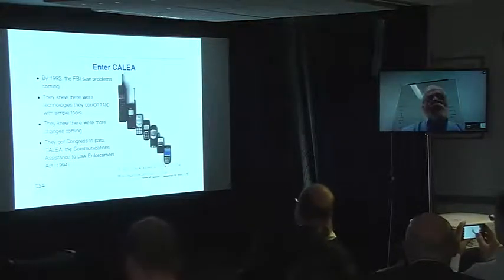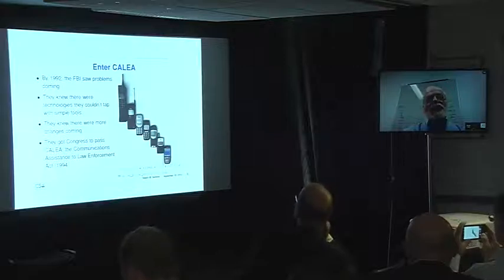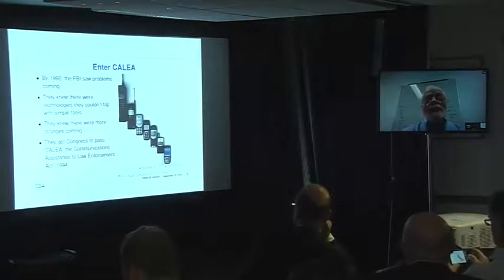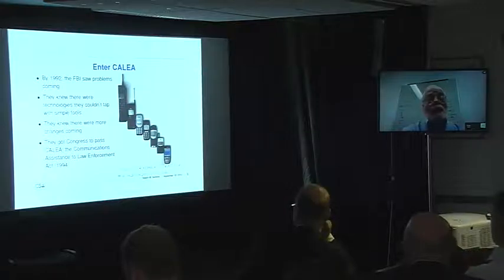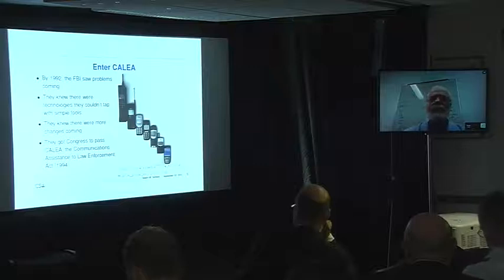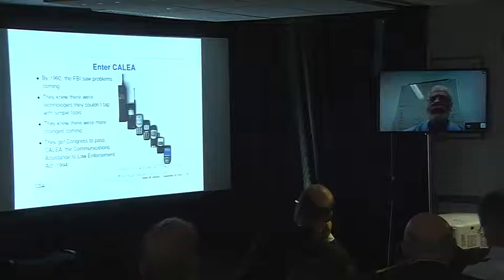By 1992, the FBI realized that technology was changing in ways that were not going to be friendly to wiretaps. They were anticipating ISDN, and mobile phones were already present, so they knew there would have to be something different in how they tapped phones. So they got Congress to pass a law known as CALEA, the Communications Assistance to Law Enforcement Act.